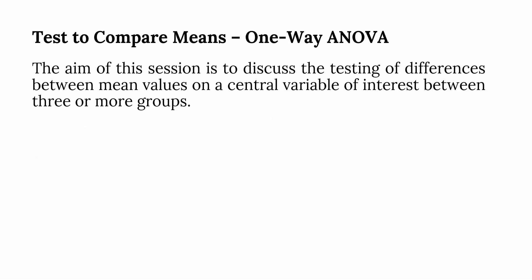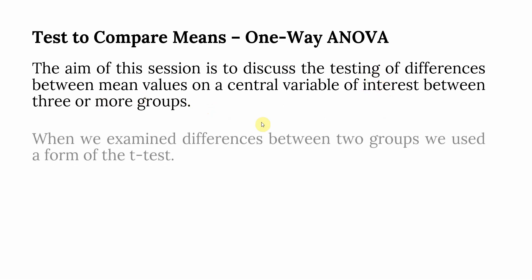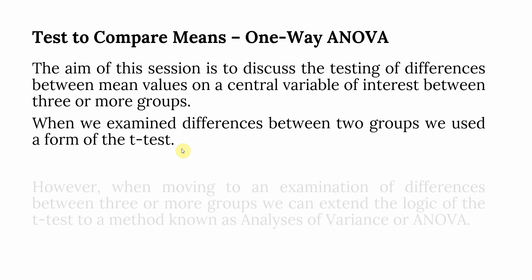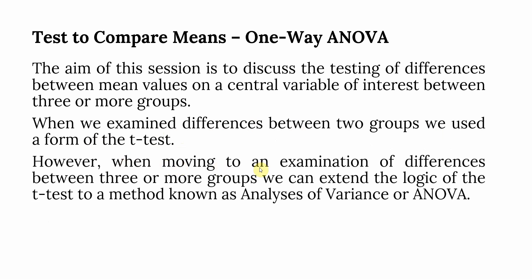The aim of this session is to discuss the testing of differences between mean values on a central variable — the dependent variable — between three or more groups. When we examined the differences between two groups, we used the t-test. However, when moving to an examination of differences between three or more groups, we can extend the logic of the t-test to a method known as Analysis of Variance, or ANOVA.